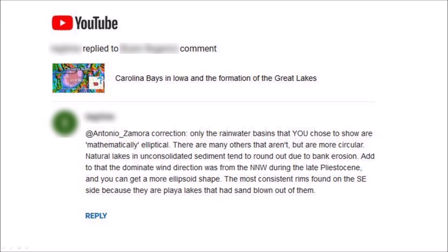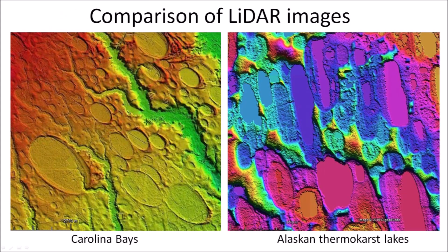The most consistent rims found on the southeast side are because they are playa lakes that had sand blown out of them. Anybody who has studied the LiDAR images can easily see that the Alaskan thermokarst lakes have very rough irregular borders compared to the smooth elliptical features of the Carolina Bays. You don't need to be a geologist to understand that the Carolina Bays were not created by the same physical mechanisms as the lakes in Alaska.